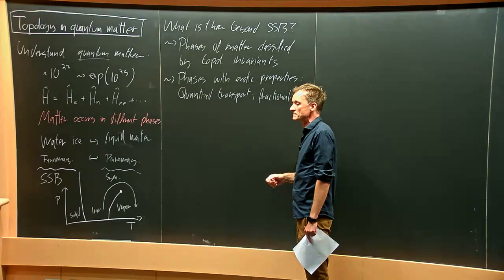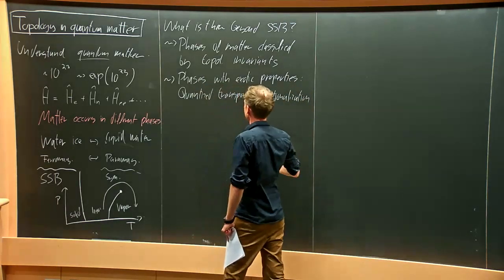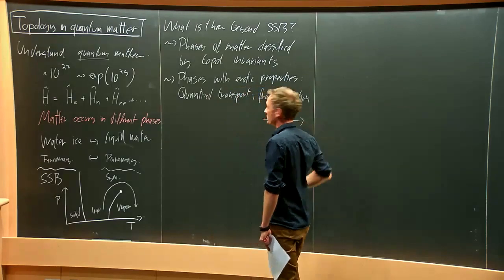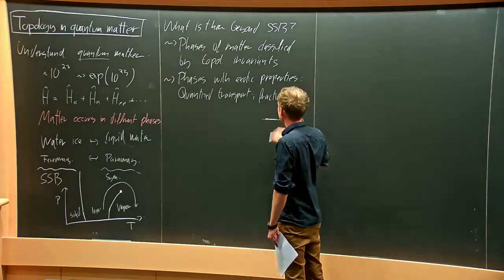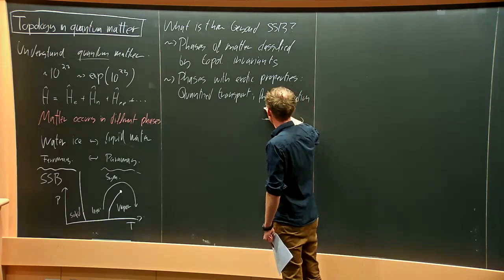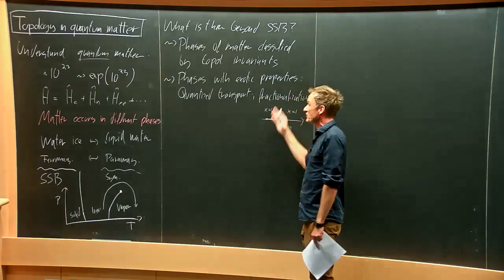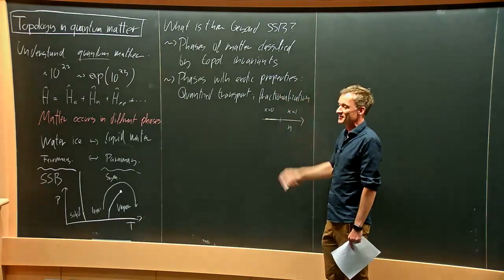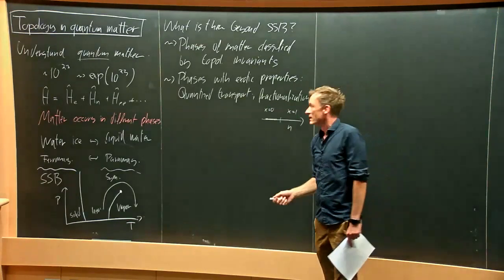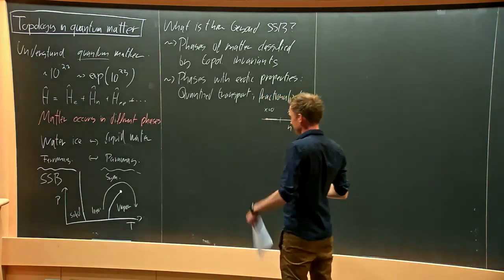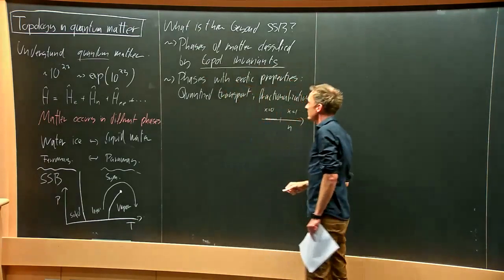What I mean by topological invariants is that these are quantities that cannot change continuously. If we have a small parameter in the Hamiltonian, we can't adiabatically change this invariant — it takes values like 0 or 1. But we can tune a parameter in our system and have a phase transition from a phase described by invariant 0 to one where it is 1. For example, applying a magnetic field might cause the topological invariant to jump from 0 to 1 at some critical field, but it cannot be 0.1 — it cannot change continuously.